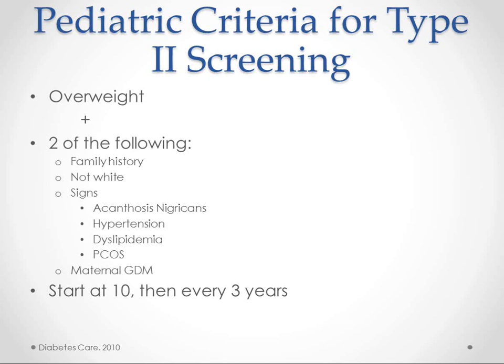The criteria for testing for type 2 diabetes is if you're overweight and you have two of the following: a family history, being any race other than Caucasian, or having signs like acanthosis nigricans, hypertension, dyslipidemia, PCOS, or a history of maternal gestational diabetes. If you have two of those, it's a good idea to test for type 2. You start doing this at age 10, and if they don't have it, test them again three years later.